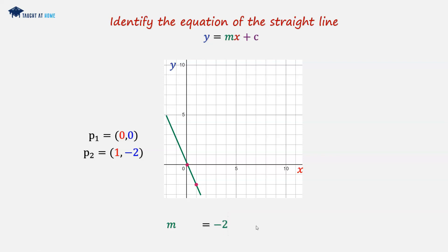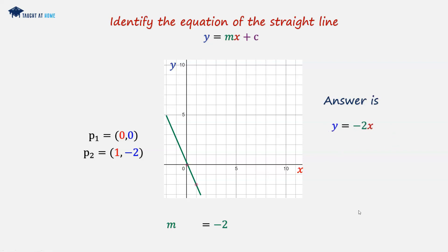Now we substitute this back into the equation. So y is equal to minus 2x plus 0. The 0 is eliminated, so simply y is equal to minus 2x.